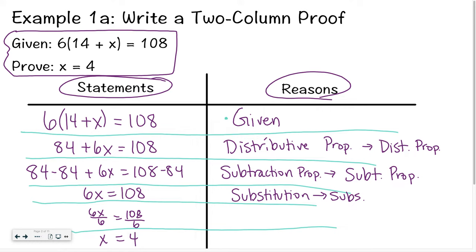Then I divided both sides by 6, so division property — or if you want to abbreviate it, div prop. And the last step, instead of writing out the division, I just changed it. That is more substitution. So you solve algebraically, and you write each of the reasons why on the right-hand side.